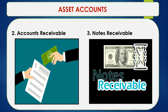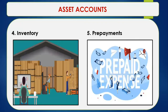Accounts receivable is a trade account receivable that usually occurs if your customers bought on credit instead of cash, giving you receivables from your customers. Another asset account is notes receivable, which refers to accounts receivable or collectibles of the company supported by a promissory note. Next, we have inventory, which refers to the merchandise of the company intended for sale in the course of business operations — sometimes called merchandise inventory. Another asset account is prepayments, which are advance payments made by the company. For example, if the company paid rent in advance for one year, the advance payment is called prepaid rent expense.